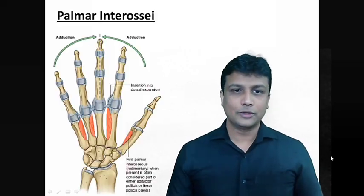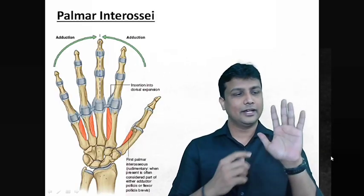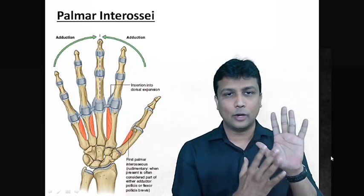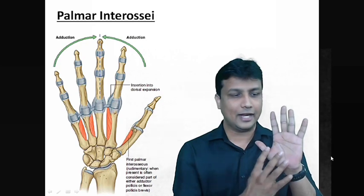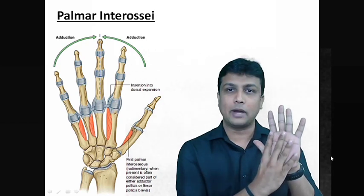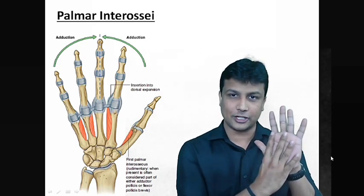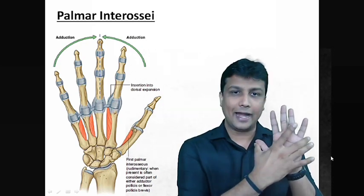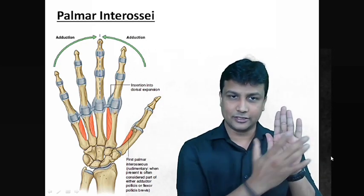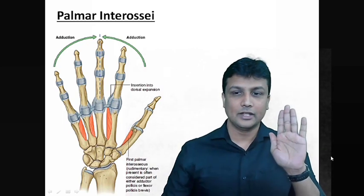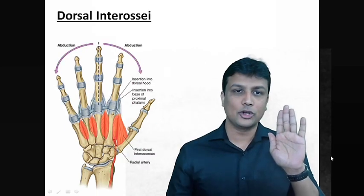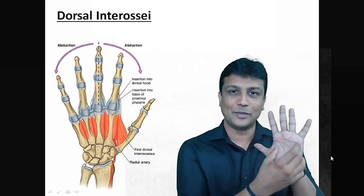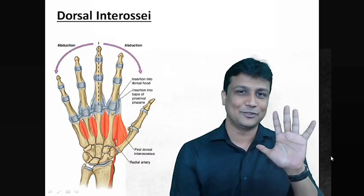There are a total of 20 muscles in the hand. Out of those 20 muscles, there are four palmar interossei, which help in adduction of the fingers, and four dorsal interossei that help in abduction of the fingers.